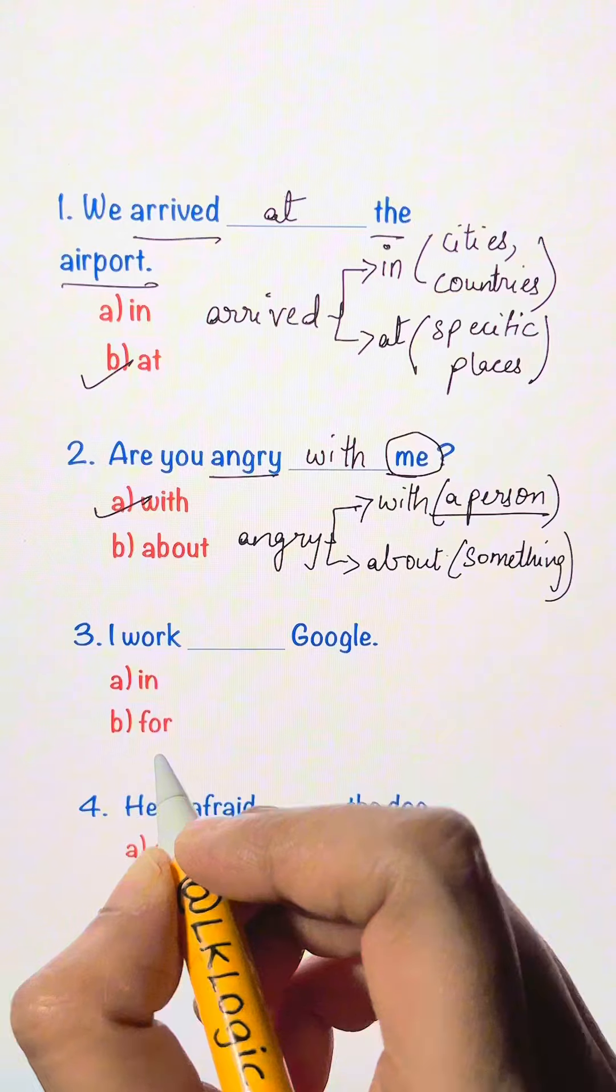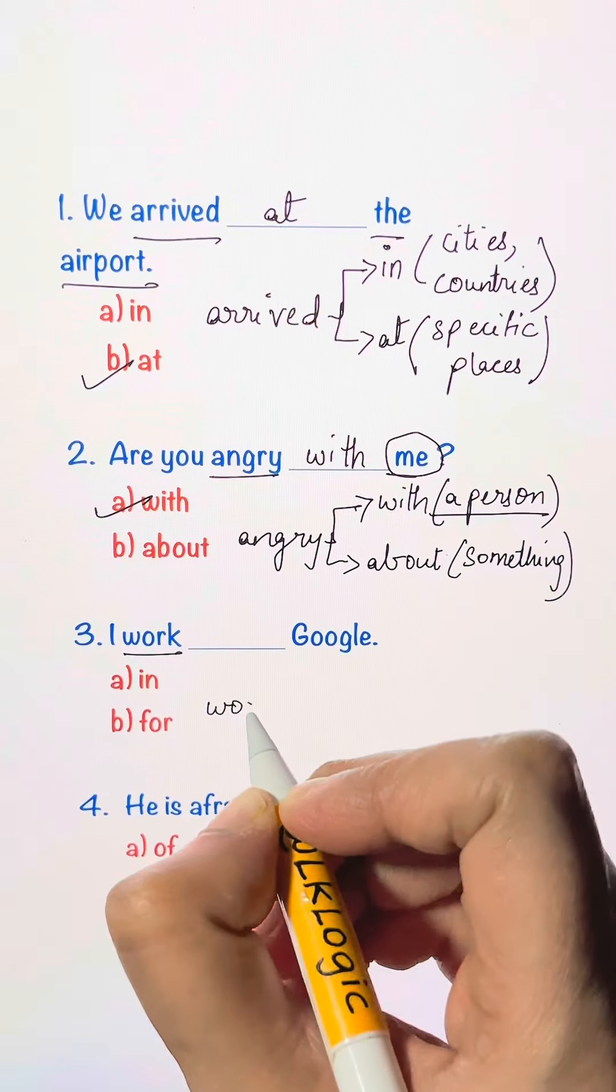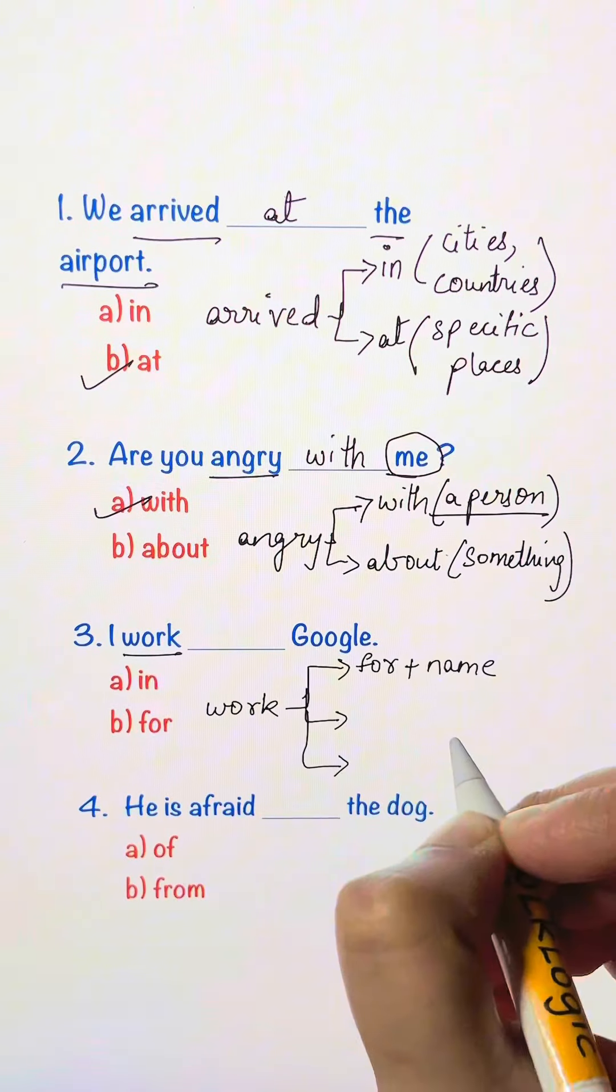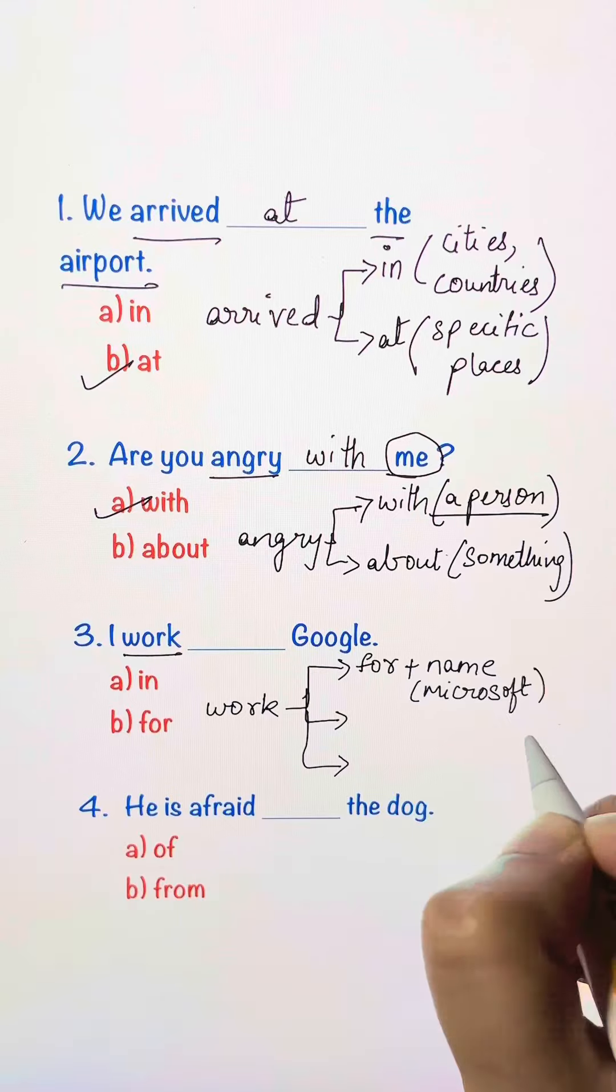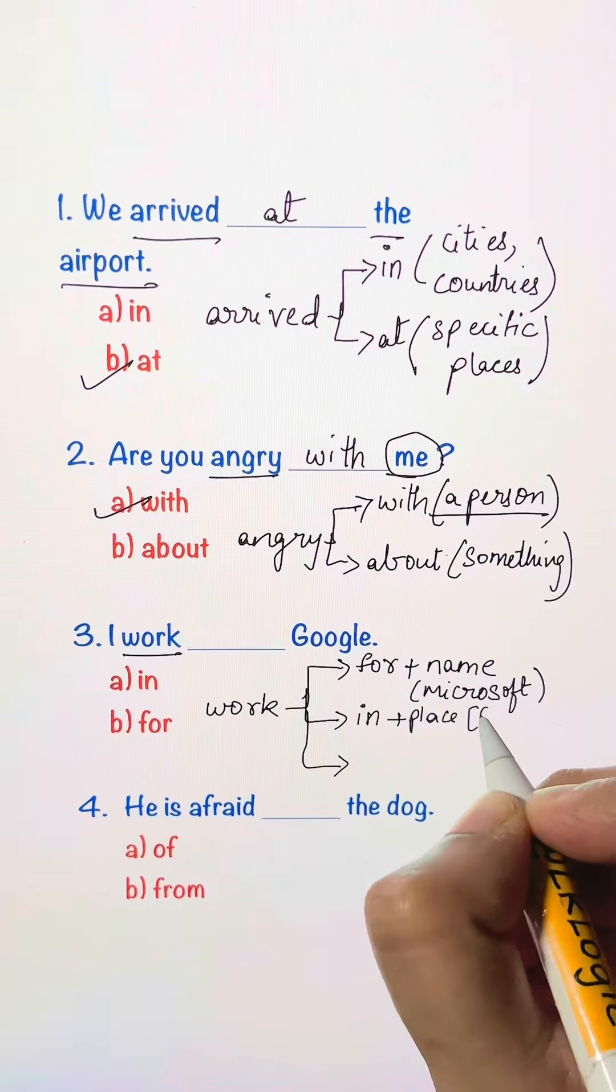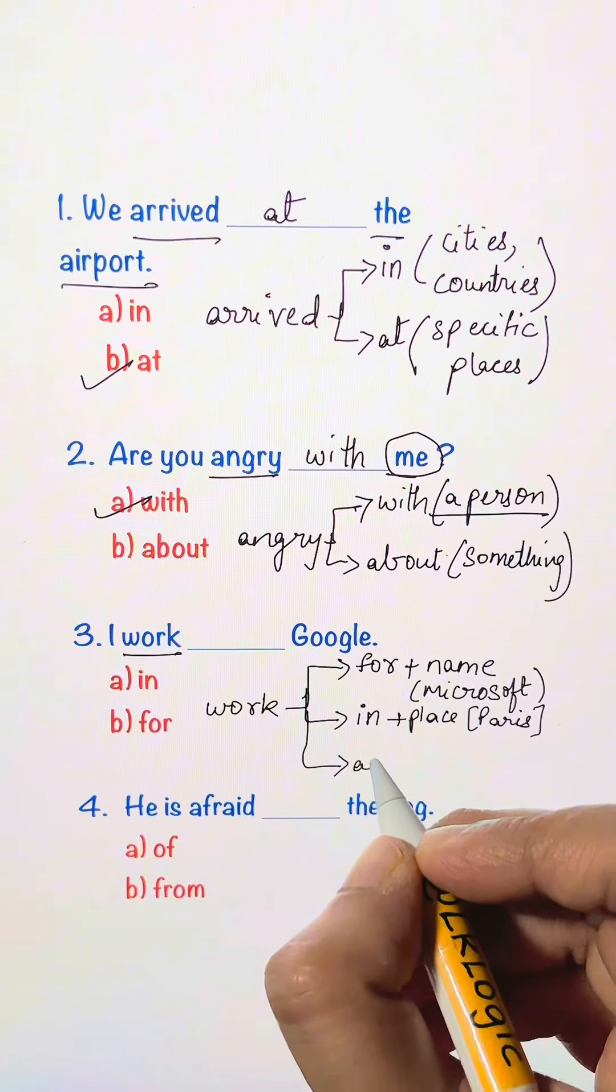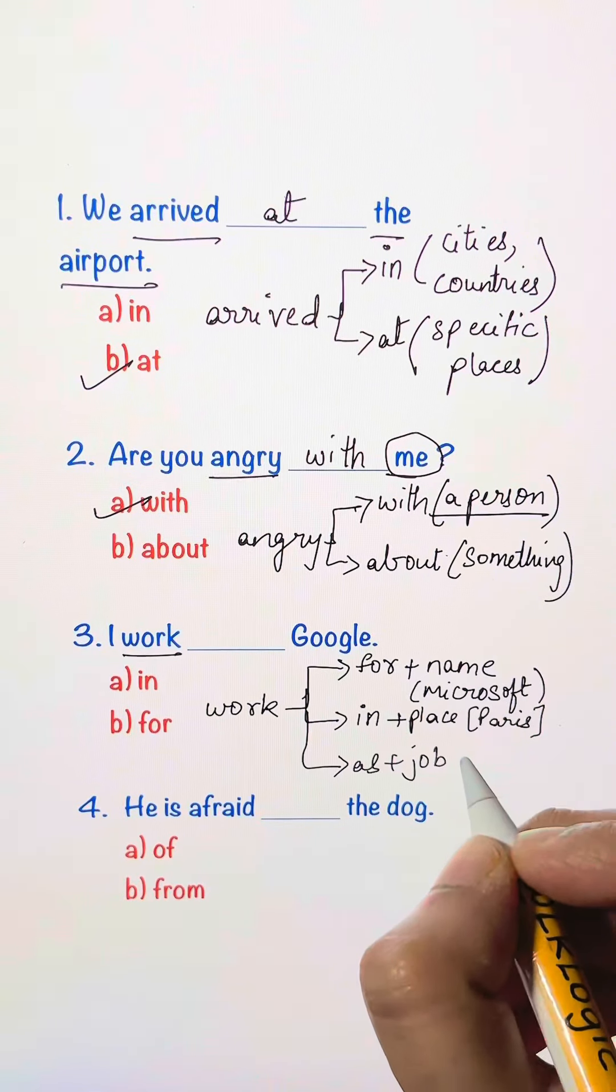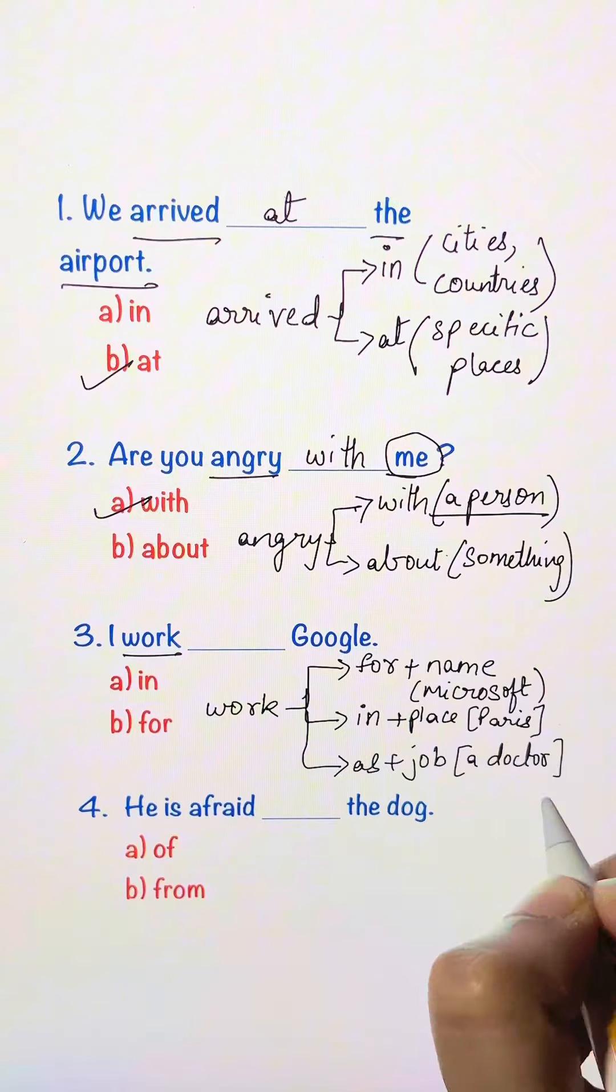I work blank Google. Keyword here is work. We say work for plus name. For example, I work for Microsoft. We say work in plus place. For example, Paris. I work in Paris. We say work as plus job. For example, a doctor. I work as a doctor.